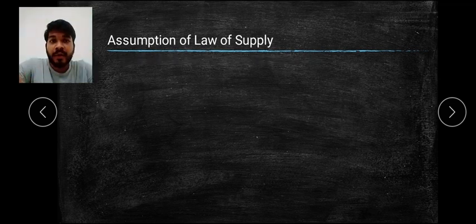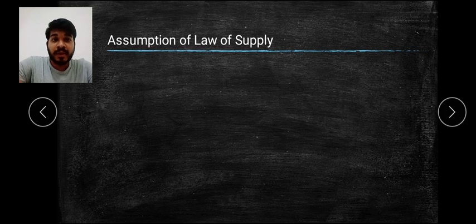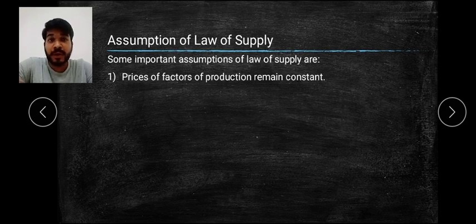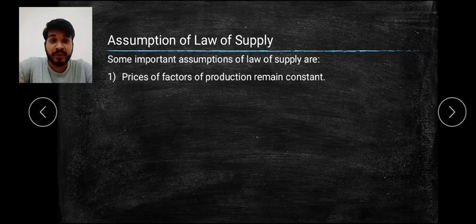We have to go with assumptions. To make a particular law successful, you need to have certain assumptions. The first assumption is that the price of factor of production remains constant. The cost of production should remain the same — it should not change when we are demonstrating the Law of Supply. Any factor cost for making that particular product should not change.